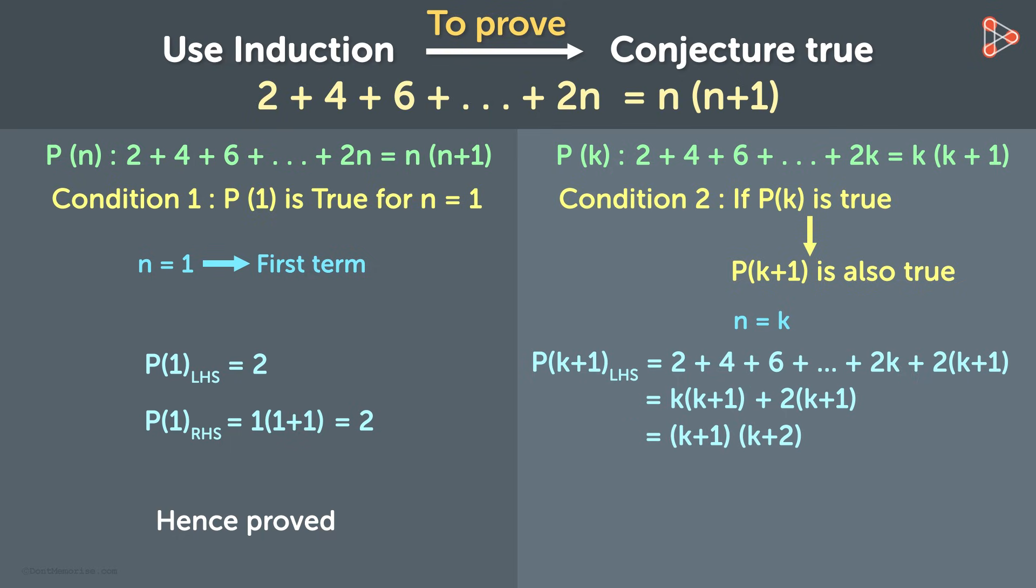Now to calculate the right hand side, we replace the k with k plus 1 in this expression. Hence we get the right hand side of P of k plus 1 as k plus 1 multiplied by k plus 1 plus 1. And that gives us k plus 1 times k plus 2. Hence we can say that the left hand side of P of k plus 1 is equal to its right hand side. This means P of k plus 1 is true and the inductive proof is now completed.